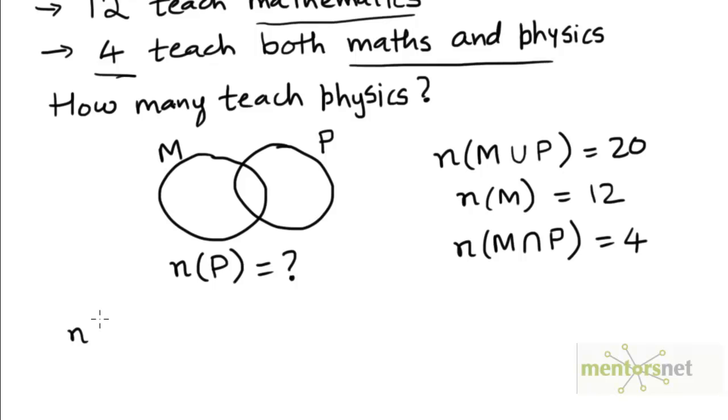So we know that n(M union P) for any two sets M and P will be n(M) plus n(P) minus n(M intersection P).